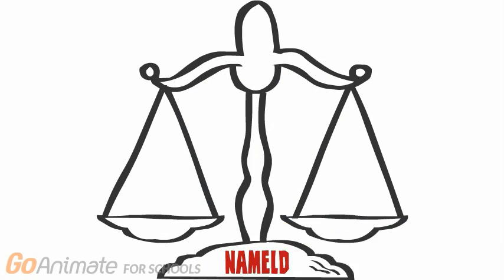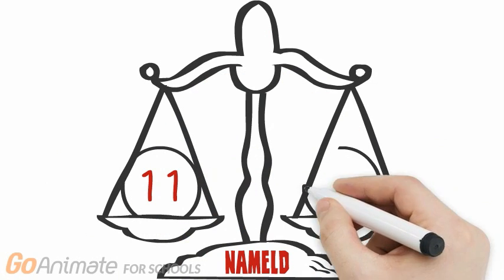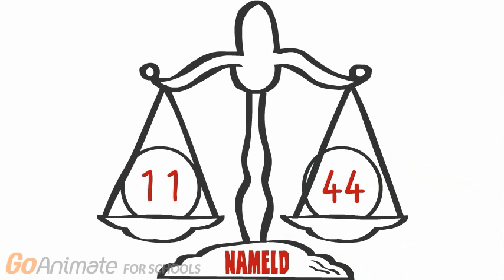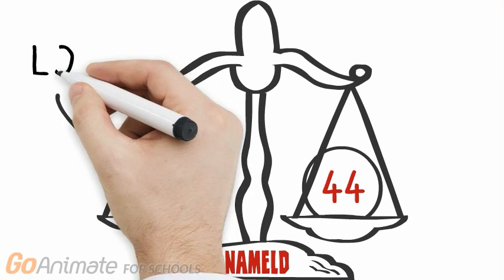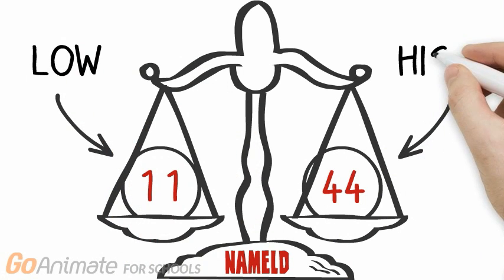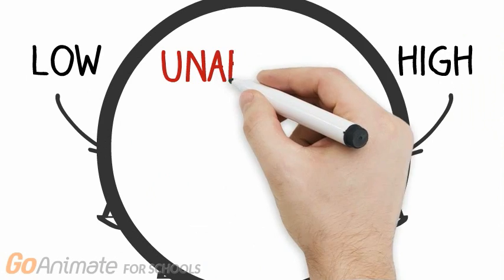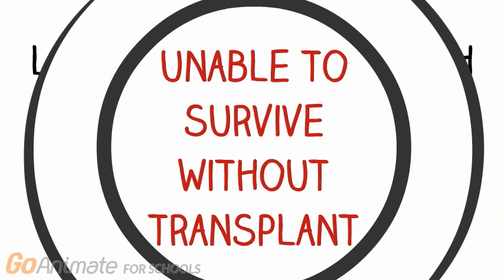NAMELD uses a scale ranking people between 11 and 44 depending on the level of urgency for a transplant, with 11 being low and 44 being high, although those deemed unable to survive for the next 7 days without a new liver are given priority over everyone else.